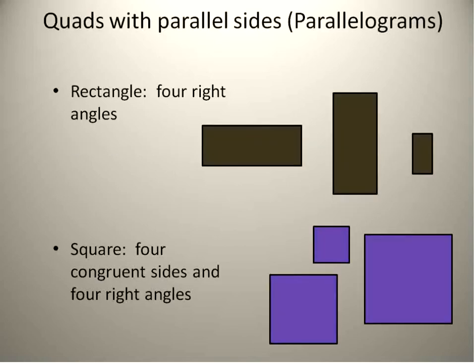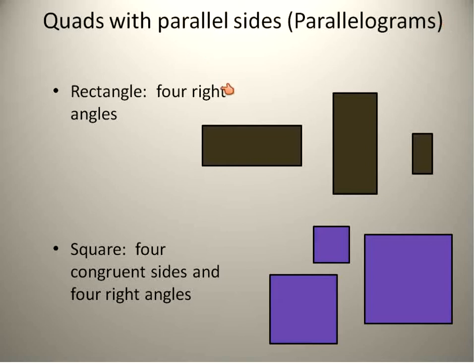Remember, quadrilaterals with two sets of parallel sides are called parallelograms. So a rectangle is a parallelogram — it has parallel sides. The top and bottom are parallel, and the sides are parallel. That makes a rectangle a parallelogram. It's a special kind of parallelogram because it has four right angles — the angles inside are all 90 degrees.